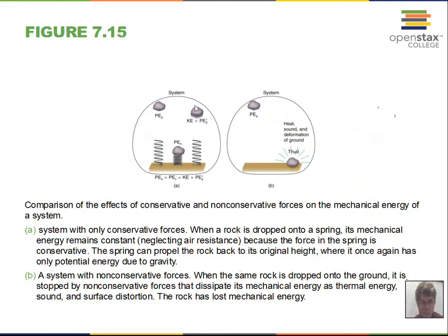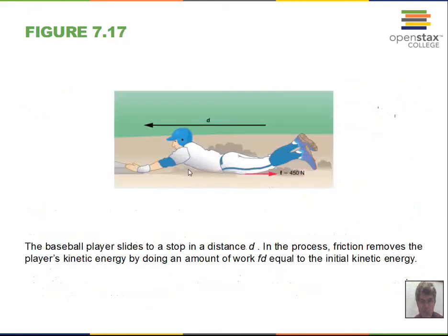A person pushing a box — friction acts against the motion. The work put into the box by the person will not all be recoverable, because friction takes away energy, making it unavailable as potential or kinetic energy at the final location. A baseball player sliding into a base has kinetic energy; friction helps them stop. With a certain friction force acting over the sliding displacement, friction does negative work and takes away kinetic energy, bringing the player to a stop.